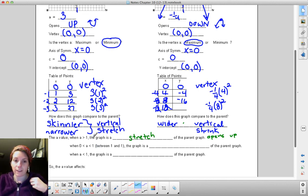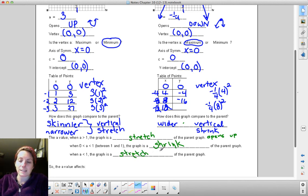In general, the a value, when a is greater than 0, the graph is a stretch of the parent graph. When a is between 0 and 1, or between negative 1 and positive 1, the graph is going to be considered a vertical shrink of the parent graph. So if it's fractional, whenever we have that fractional value. And when a is less than negative 1, so again we go back to that whole number, bigger than 1, we're going to go back to stretch. But now that the a value is negative, instead of opening up, my graph is going to open down.